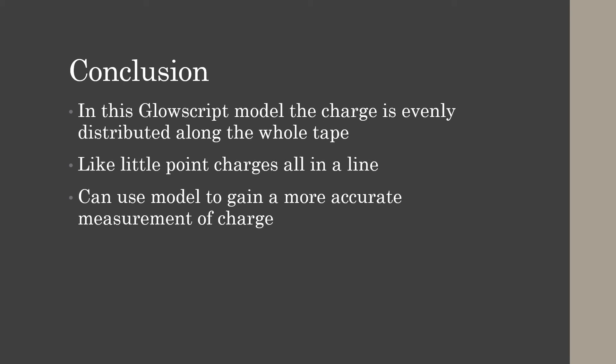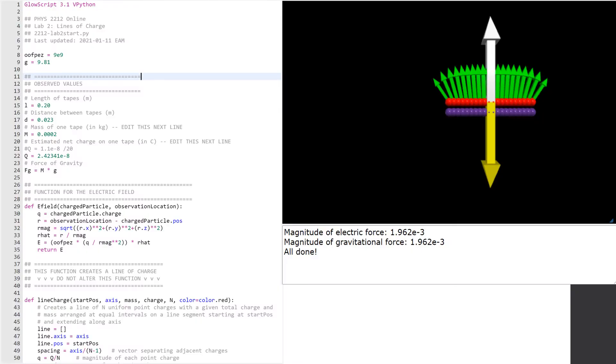Knowing that the ultimate electric force is going to have to equal the force of gravity. And so on this slide you can see our model with the red representing tape B and the purple representing tape A. The yellow arrow represents the gravitational force and the white arrow represents the electric force, whereas all of the green arrows represent the point charges of the electric force.